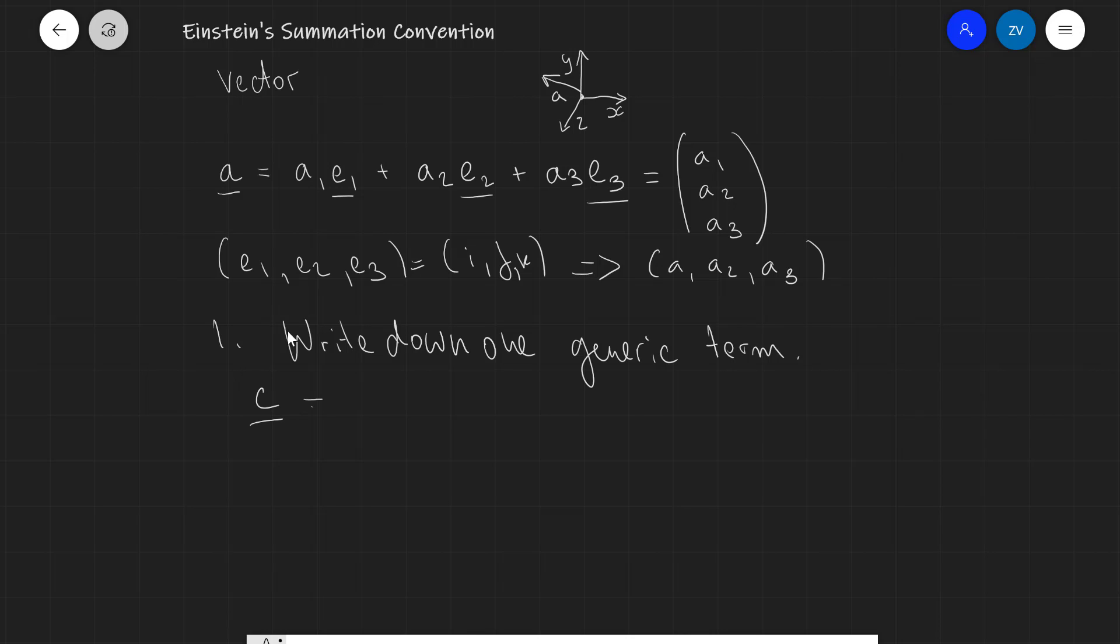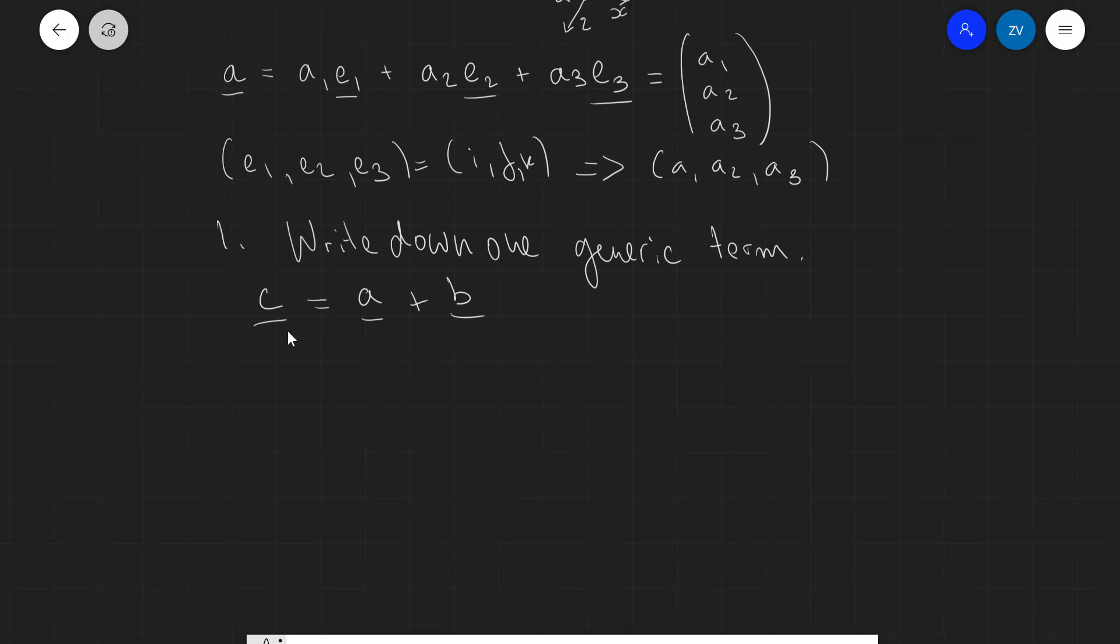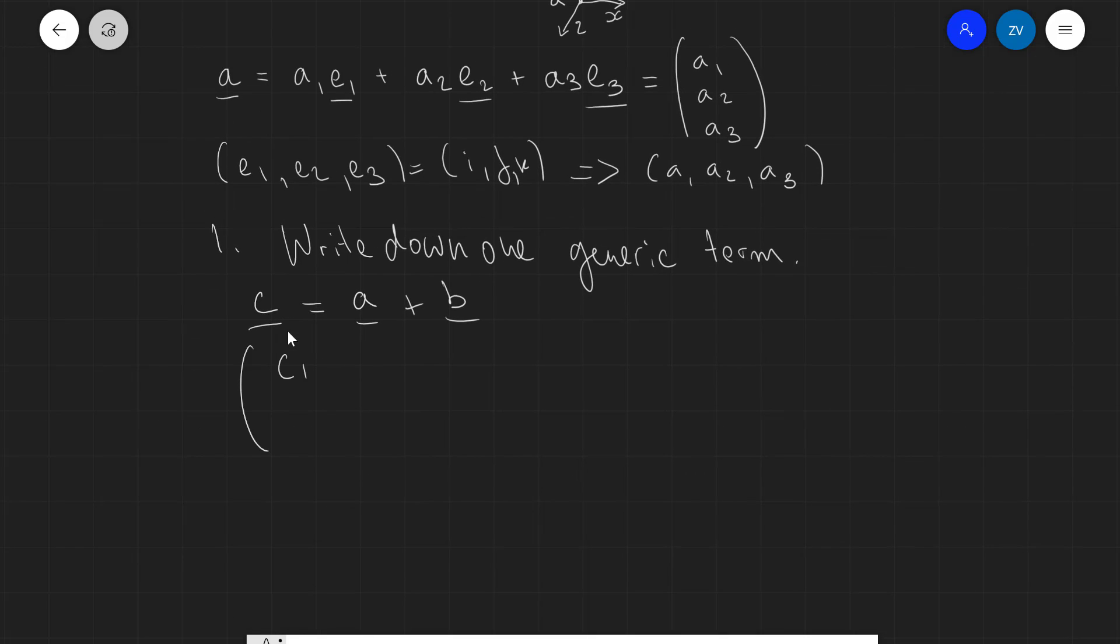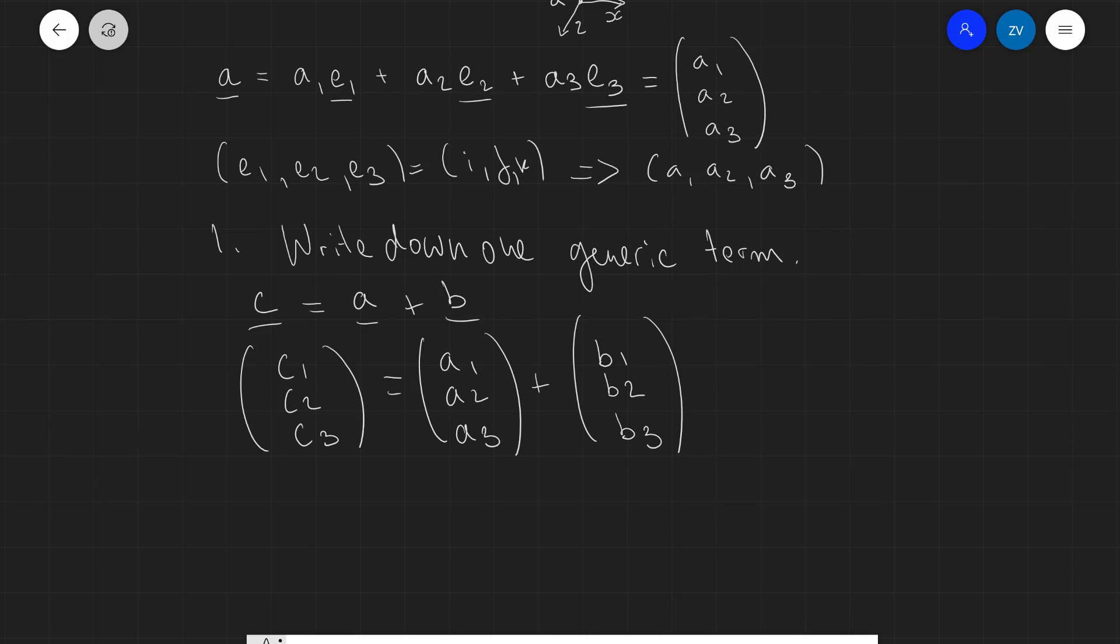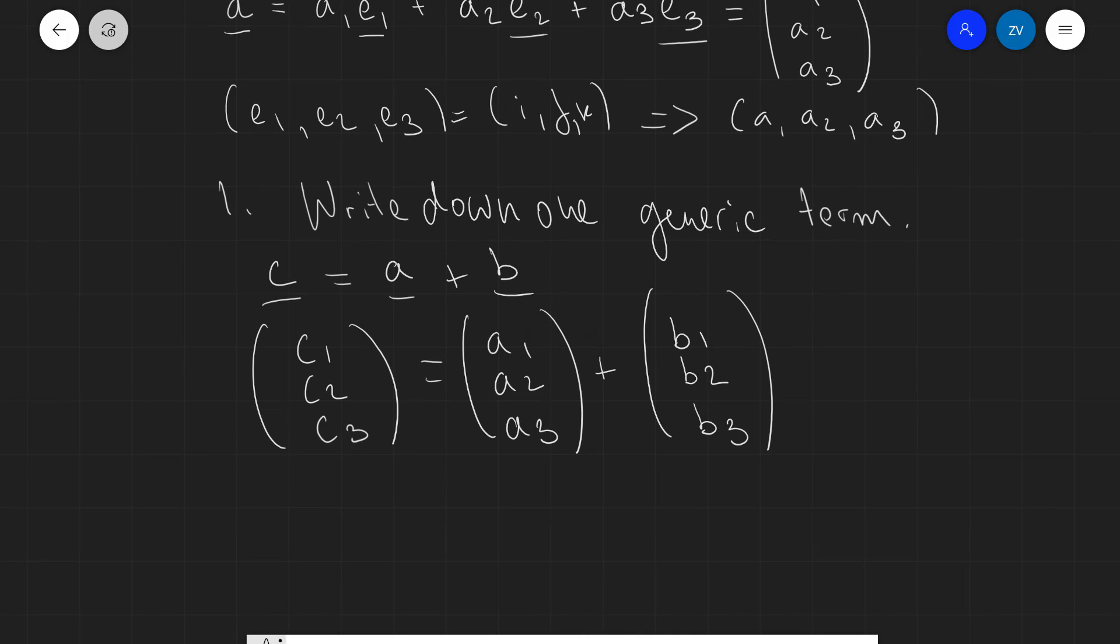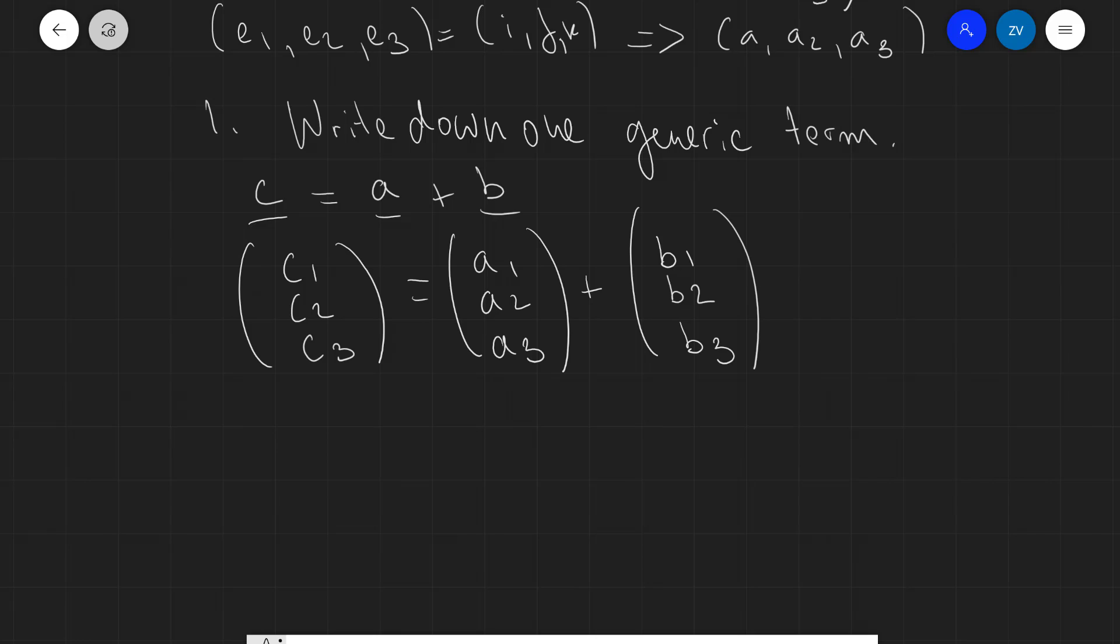Let's say that I had the vector c, and let's say that c was vector a plus vector b. We could write this down as c₁, c₂, c₃, and let's say that this is going to equal to a₁, a₂, a₃, plus b₁, b₂, and b₃. Now, we can see that this is already an awful lot of writing, and all I've done is just literally the simplest vector operation that you can do, which is just adding two vectors.